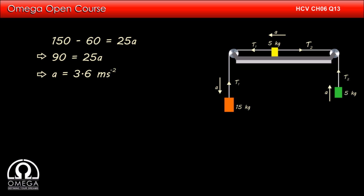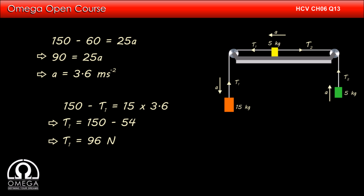Putting the value of acceleration in equation 1, we get 150 minus T1 equals 15 into 3.6, which implies T1 equals 150 minus 54, or T1 equals 96 newtons. This is our answer.